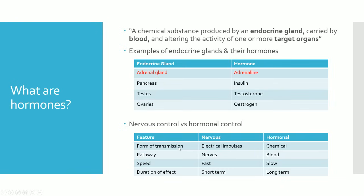The main comparisons are: form of transmission, pathway, speed, and duration of effect. In terms of transmission, the nervous system uses electrical impulses whereas the hormonal system uses chemicals. For the pathway, the nervous system uses nerves whereas the hormonal system uses blood.